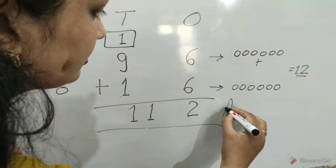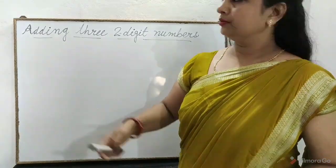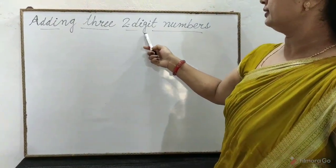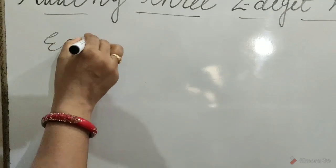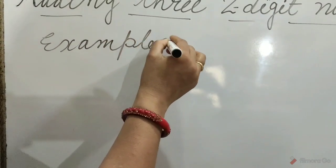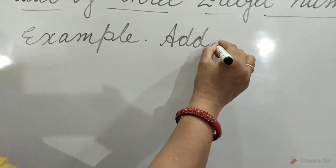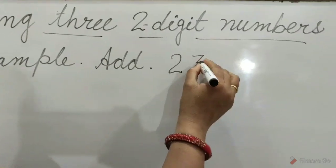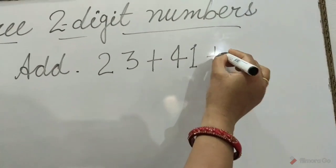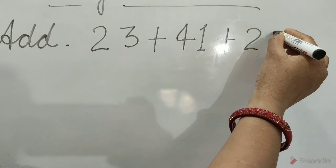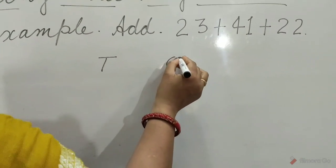Now, adding 3 two-digit numbers. Example. Add 23 plus 41 plus 22. Write tens and ones.